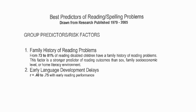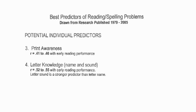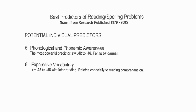The second predictor is early language development. Children who have difficulties acquiring language early on are more likely than others to have difficulty with reading in school. Other predictors include how easily they become interested in print in their environment, the ability to learn letters of the alphabet, the ability to isolate syllables and sounds within words, and the ability to use vocabulary — learning new words and using them effectively.